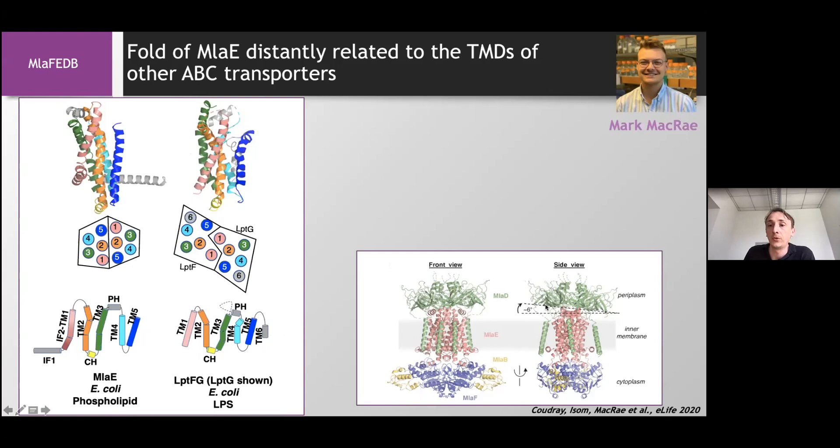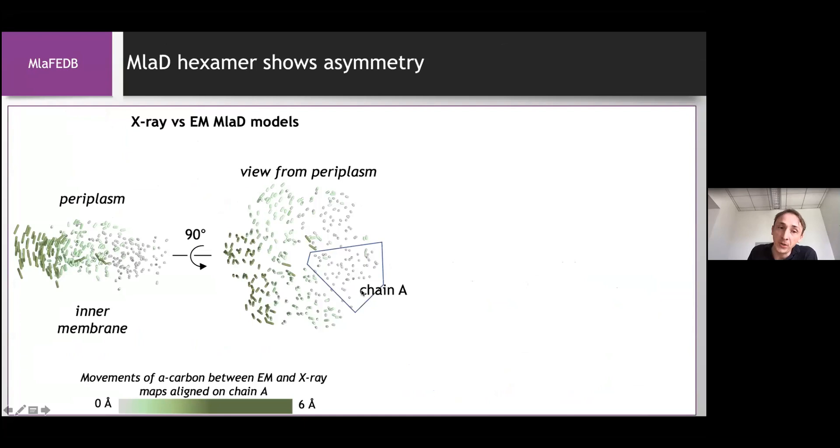Another thing that you can notice on this model on the right-hand side is that the MLA-D is actually tilted by six degrees relative to the MLA-FEB domains at the bottom. So now when we look a little bit more at this MLA-E domain and compare it with the X-ray structure that was known, so here you see a comparison when we align the two models on the chain A. And you can see that the symmetry is actually broken here. Each green line corresponds to the movement of the alpha carbon between the EM and the X-ray structure when aligned on this chain. And you can see how the symmetry is actually broken in this cryo-EM map.